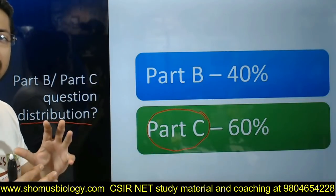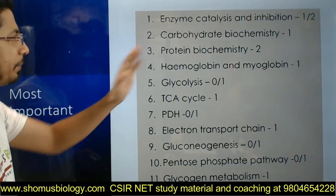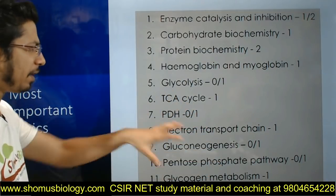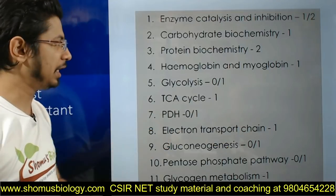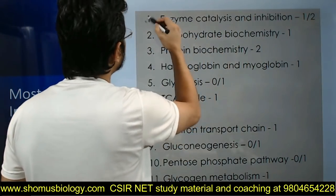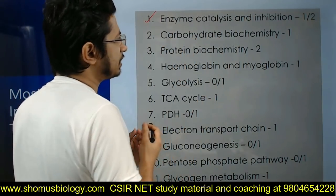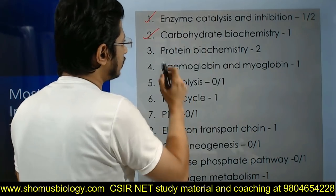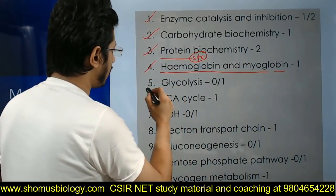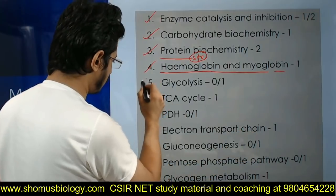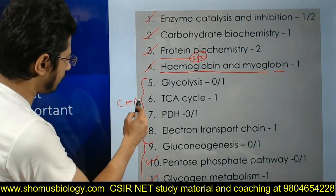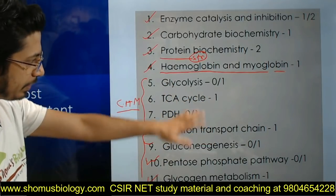The important topics you must prepare include: enzyme catalysis and inhibition (1-2 questions), carbohydrate biochemistry covering monosaccharide, disaccharide, and polysaccharide structure (1 question), protein biochemistry particularly structure and titration of amino acids (2 questions), hemoglobin and myoglobin (1-2 questions), and carbohydrate metabolism including glycolysis, TCA cycle, pyruvate dehydrogenase complex, electron transport chain, gluconeogenesis, pentose phosphate pathway, and glycogen metabolism (3-4 questions in Part C).